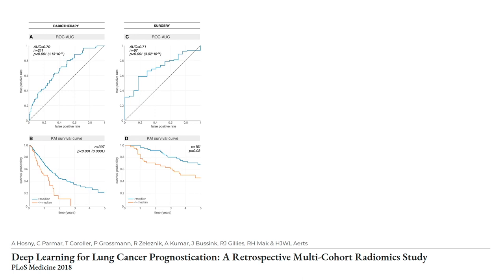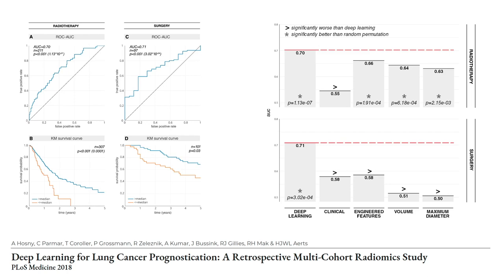We benchmarked against models built on clinical features, engineered features, the prior state of the art in radiomics, and the clinical gold standard including tumor maximum diameter and volume. We noticed comparable performances in the radiotherapy patient group when comparing advanced deep learning models to simpler volume-based models. However, we found significant improvements in the surgery patient group. It is important to note that surgery patients are often excluded from conventional radiomics experiments, as there is a lack of rationale in predicting tumor response based on phenotype if the tumor is resected.